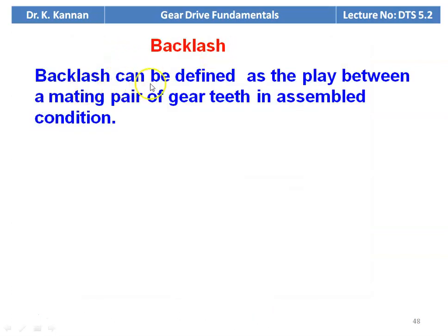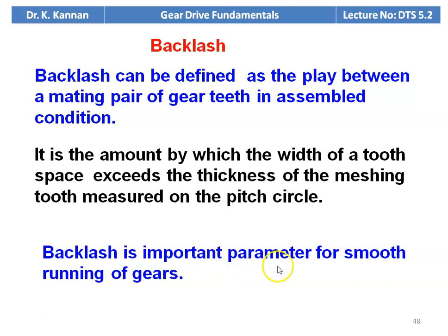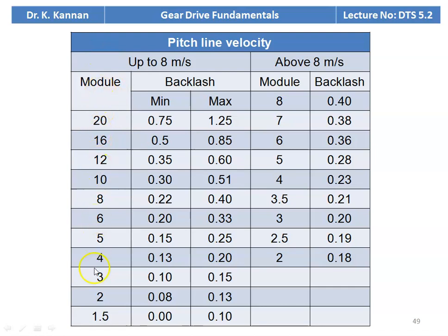Backlash can be defined as the play between a mating pair of gear teeth in assembled condition — it is a play, a clearance, a small space. It is the amount by which the width of the tooth space exceeds the thickness of the mating tooth measured on the pitch circle. Backlash is an important parameter for smooth running of the gear. The table shows the module and the corresponding backlash values when the pitch line velocity is up to 8 m/s and above 8 m/s — the backlash should be within the minimum and maximum values for the given module.